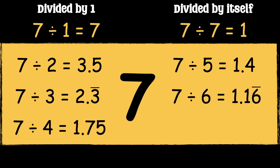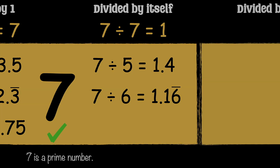Let's see what numbers we can divide 7 by. 7 can only be divided by 1 and itself, so 7 is a prime number.